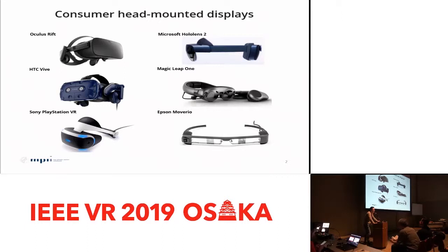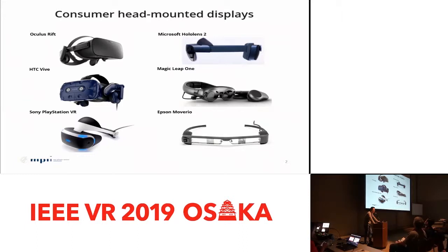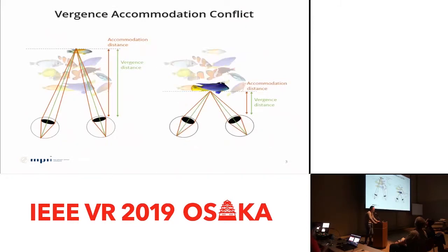Although VR and AR display technology have been advancing rapidly in the last few years, the visual experiences provided by those devices are still far from real-world viewing experiences. One of the major problems with those consumer devices is vergence-accommodation conflict. When we see objects in the real world, two things happen: vergence and accommodation.